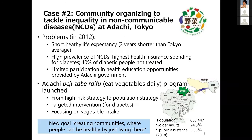Now let's move on to the next case: community organizing to tackle inequality in non-communicable disease at Adachi city in Tokyo. Adachi is located on the north end of the Tokyo metropolitan area. When the city government considered reforming their health promotion strategy, they noticed multiple problems — for example, two-year shorter life expectancy than the Tokyo average and high diabetes prevalence.